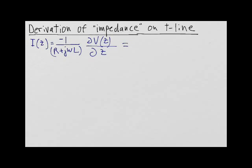If we now substitute for v of z the wave equation, we get gamma divided by r plus j omega l multiplied by v zero plus e to the minus gamma z minus v zero minus e to the plus gamma z.